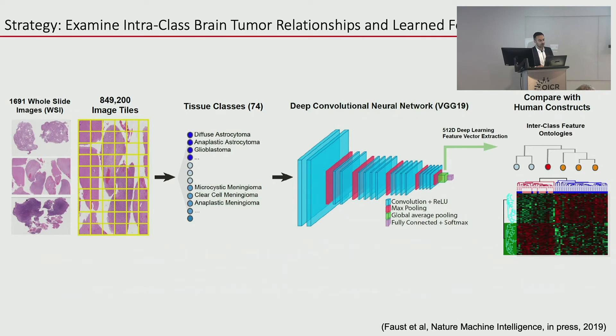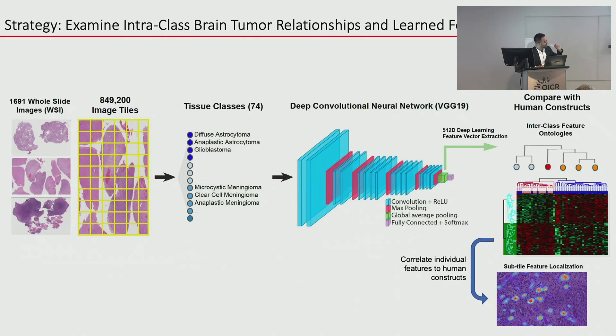Using a variant of class activation maps — feature activation maps — we can see whether features found in certain clusters represent a morphological correlate. We're moving away from classes and toward feature representations: just as a cat needs ears, eyes, and whiskers, we're deconstructing diagnoses into features. There are 78 classes on the y-axis and 512 features that the computer quantifies before making the classification.